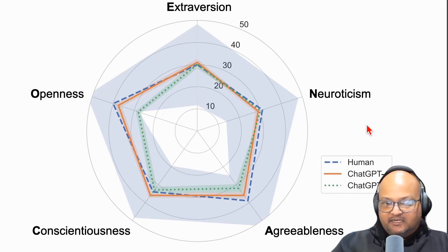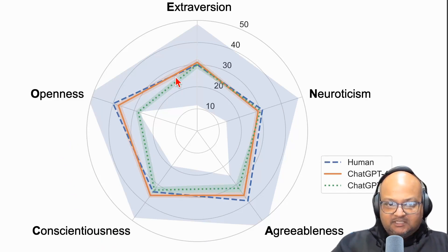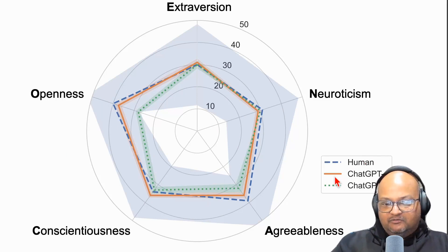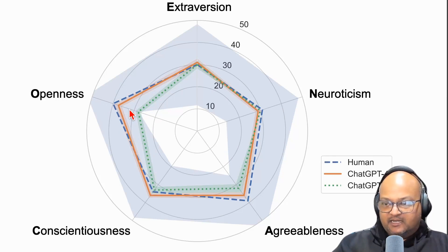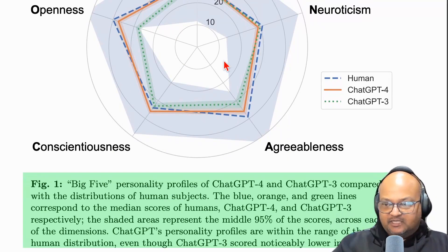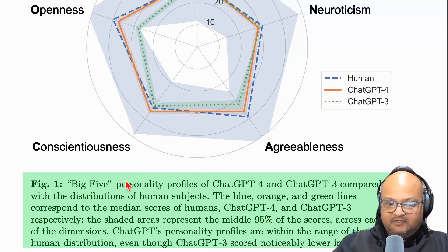The way the field of psychology characterizes human personality is along five dimensions: extroversion, neuroticism, agreeableness, conscientiousness, and openness. This diagram shows how a large sample of human beings score along these traits, along with the scores of GPT-4 and GPT-3. The human scores — the blue dotted line — are pretty close to the GPT-4 scores, the solid orange line. GPT-3 is close as well, except for a pretty big difference in the openness trait, where GPT-3 scores much lower than humans. The lines represent the median scores, and the shaded area represents the middle 95% of the distribution.